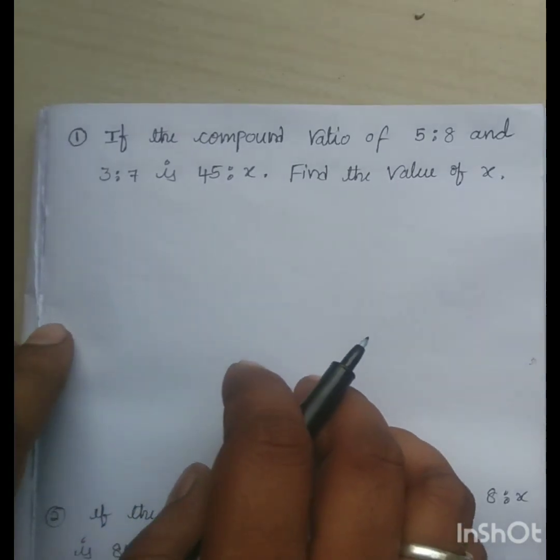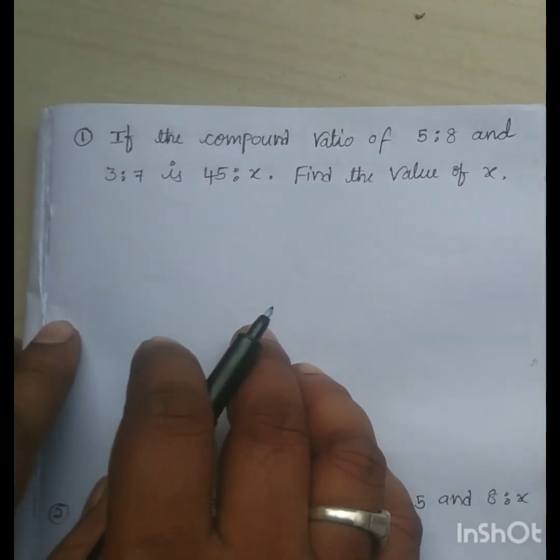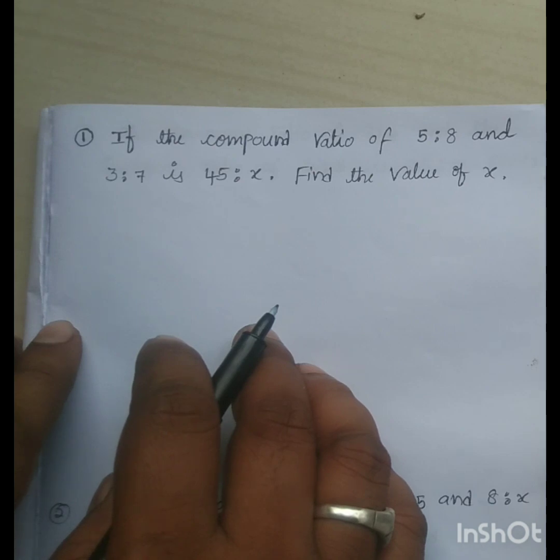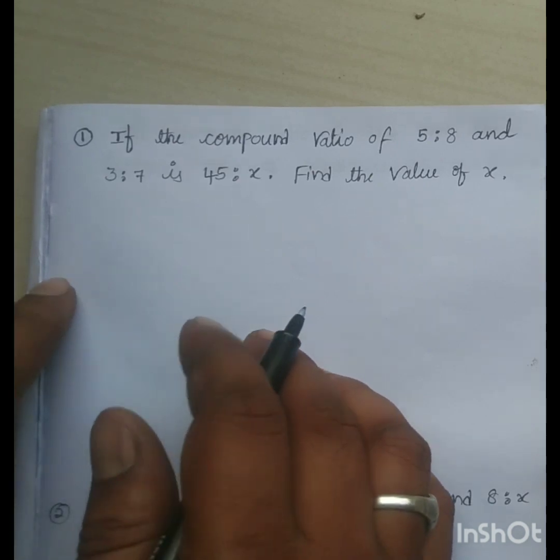Hi guys, welcome to AKN Sprint Education. Here in this problem, if the compound ratio of 5 is to 8 and 3 is to 7 is 45 is to X, find the value of X.